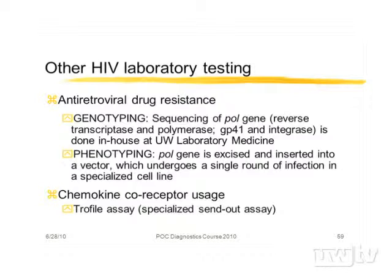Other laboratory tests worth mentioning: genotyping is important for detecting drug resistance — that's a sequencing assay of the viral genome, not a point-of-care test. We can also determine the phenotype of the virus — whether it's an R5 or X4 virus — though that's an expensive and time-consuming assay. We can look for the chemokine utilization of the virus, which is important for the use of some CCR5 blocking drugs. The complexities of HIV monitoring go from the simple like measuring antibody all the way through to sequencing the viral genome, all now part of routine care in this country and important in clinical trials internationally.